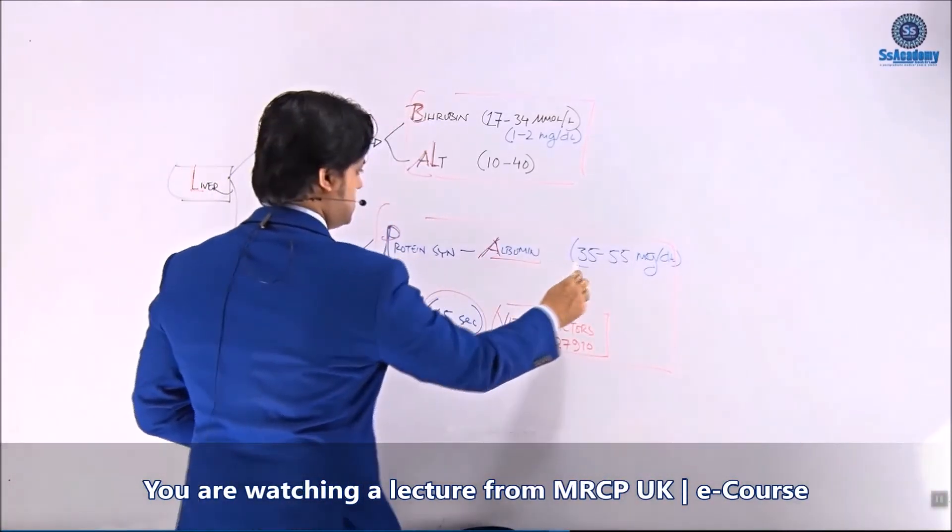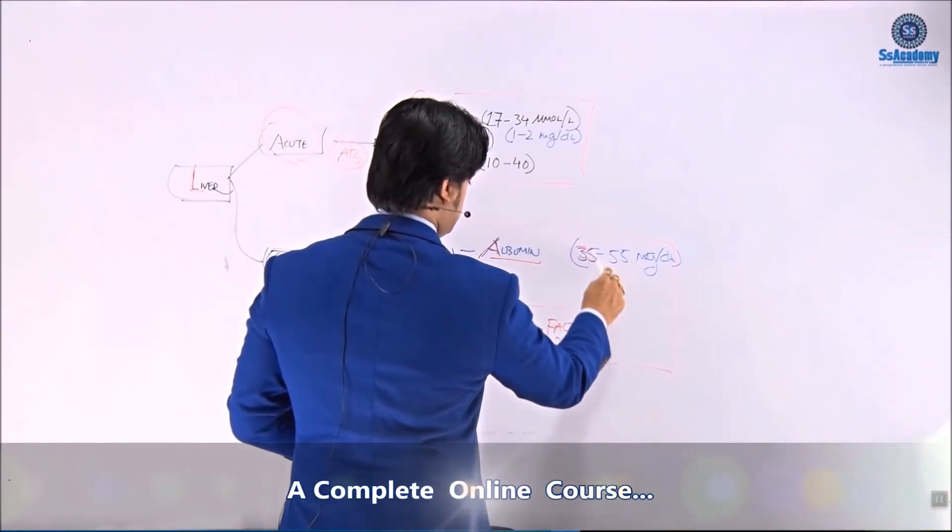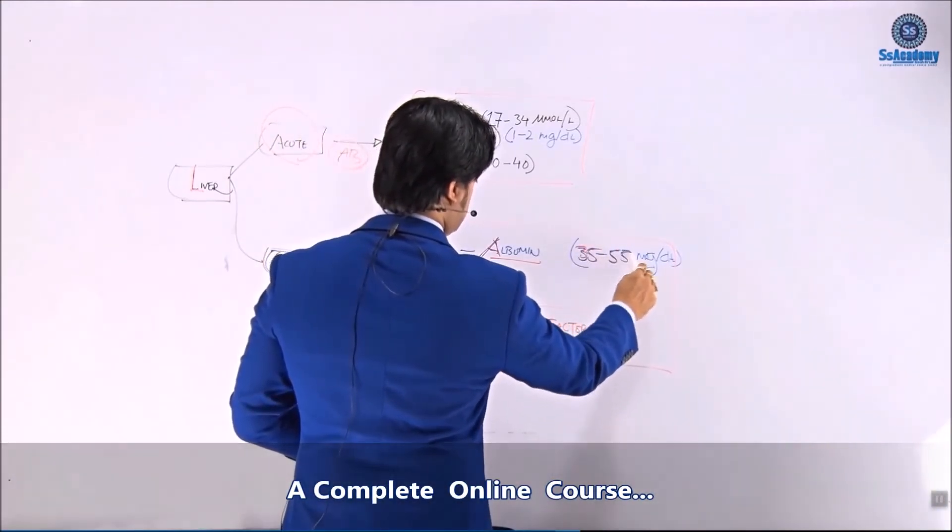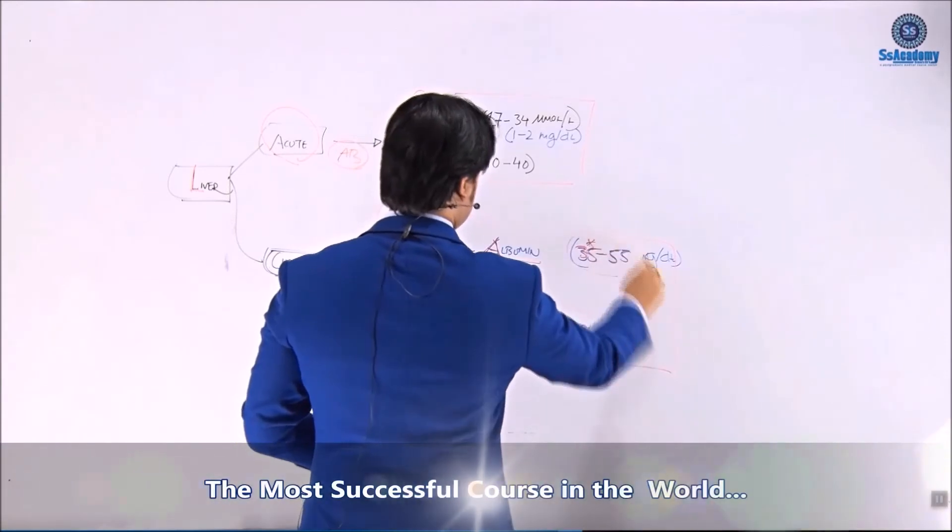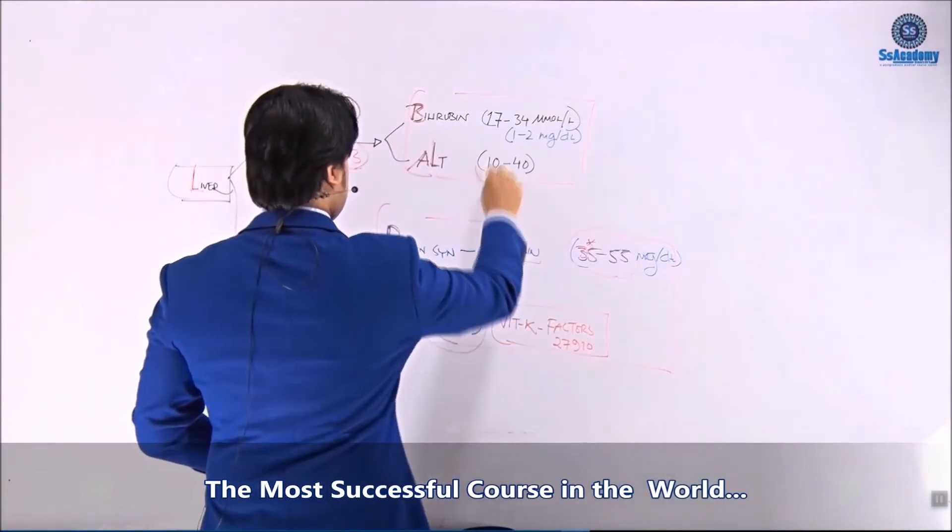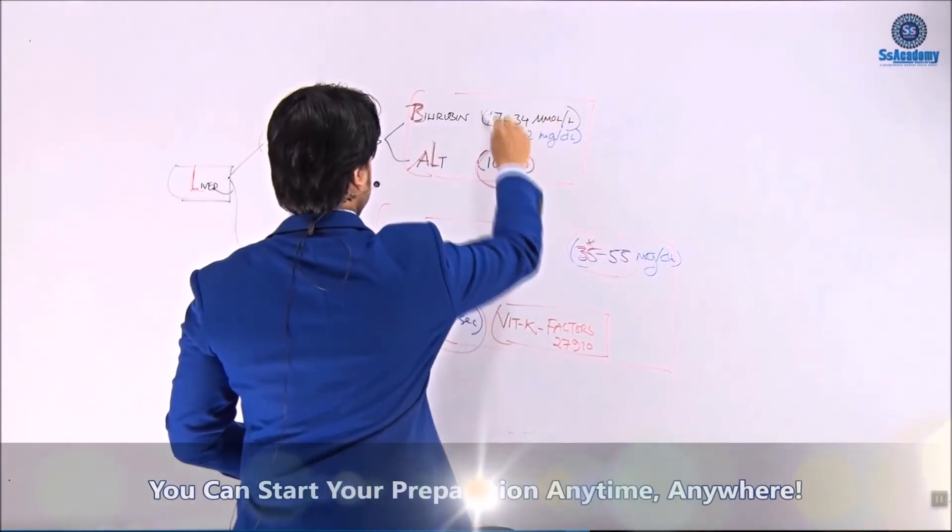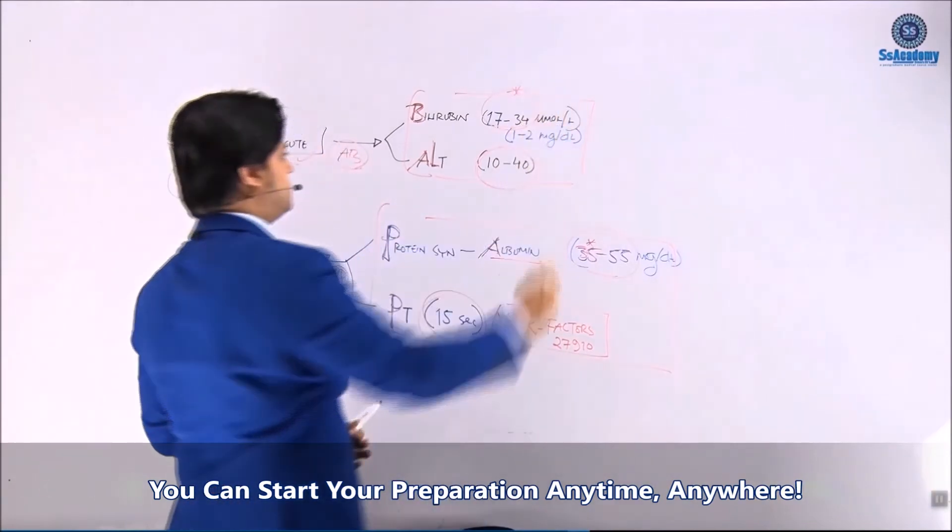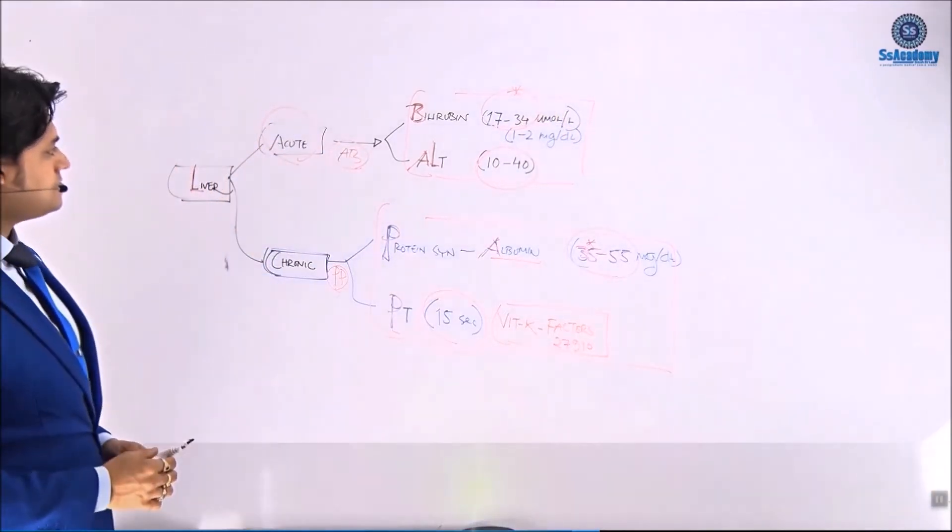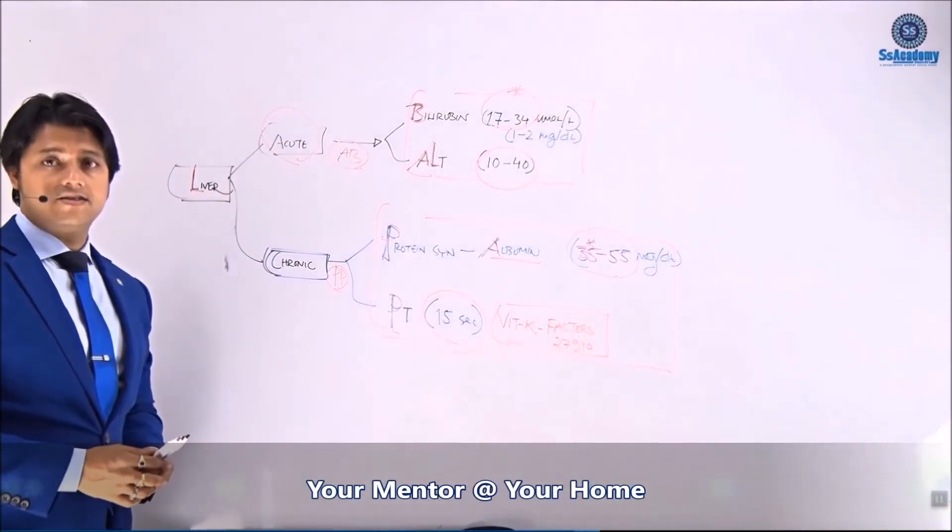Albumin. Yes, 35 to 55. 35, must remember, 35 to 55. And ALT is 10 to 40 and as well as 17 to 34 micromole per liter. Let me listen very carefully.